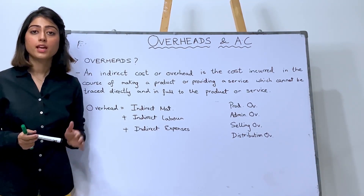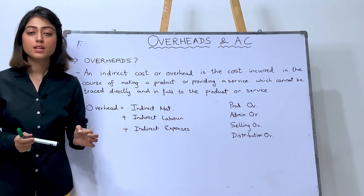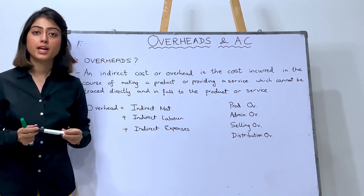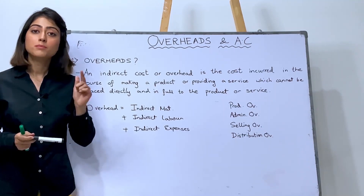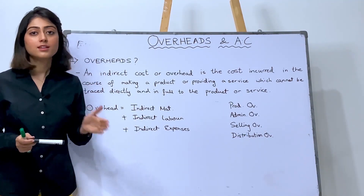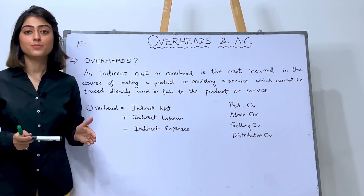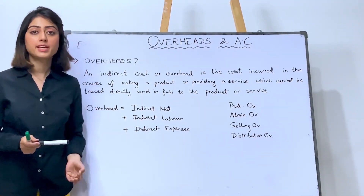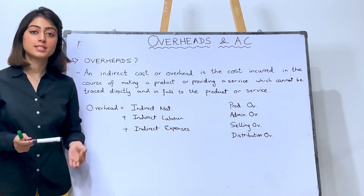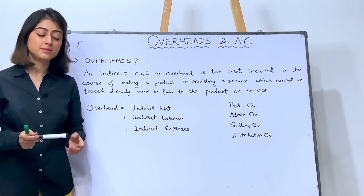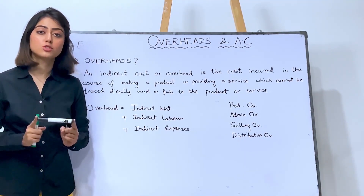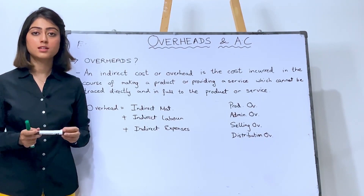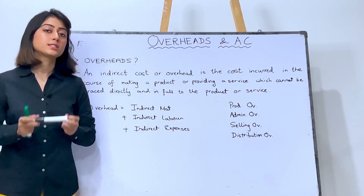This marker cannot be made without a machine, and a machine cannot run without electricity. So electricity is a kind of expense. This product is very important, but electricity is not a direct part of this product.